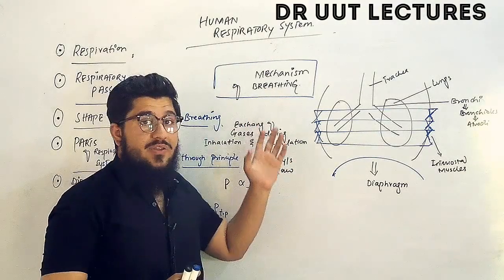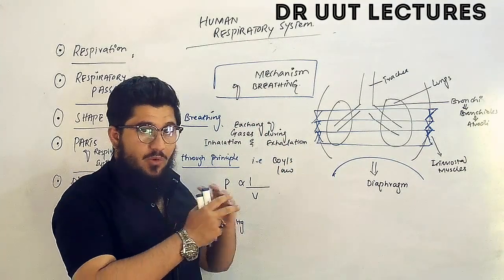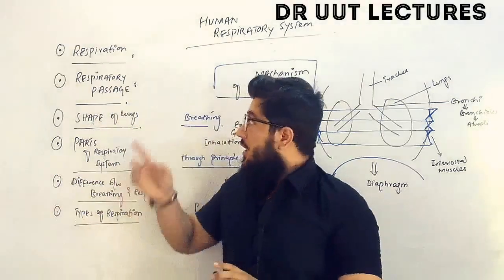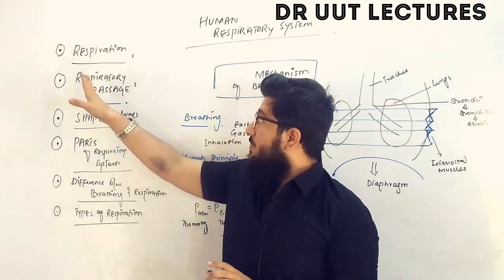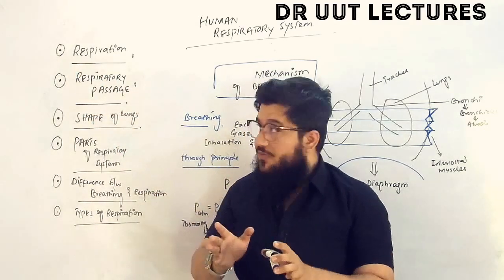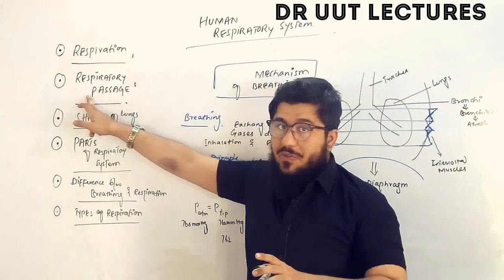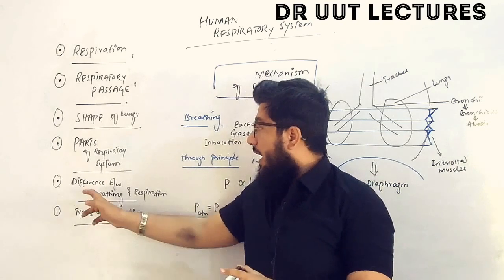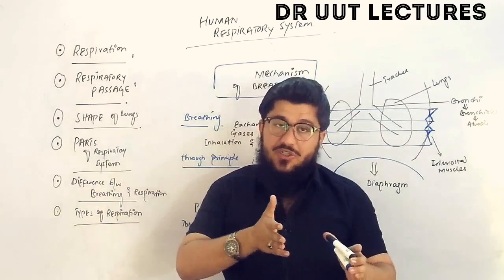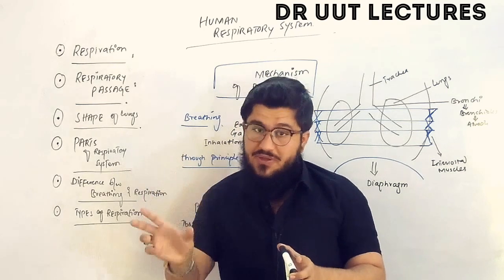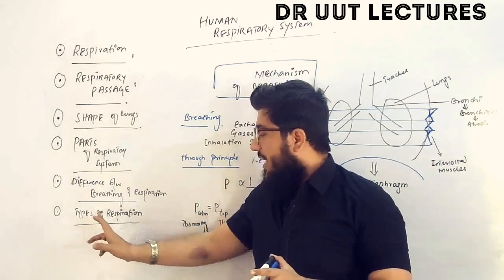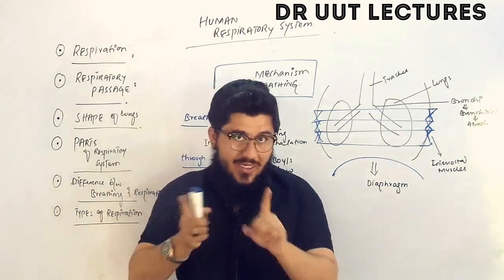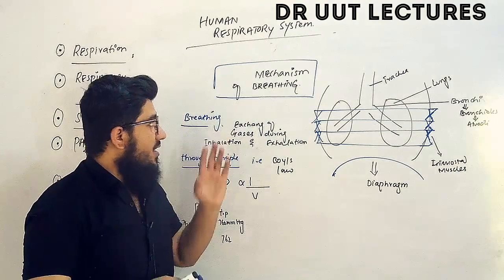In this tutorial we will discuss the mechanism of breathing. In the last video on the human respiratory system, we discussed the introduction to respiration, the respiratory passage, the shape of the lungs, the parts of the respiratory system, the difference between breathing and respiration, and the types of respiration: aerobic, anaerobic, external, and internal.